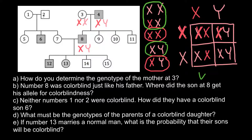Question B: number 8 was colorblind just like his father — where did son number 8 get his allele for colorblindness? We also just answered this question in the previous analysis, so we can move to question C.